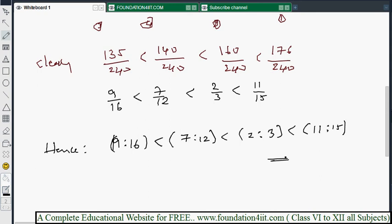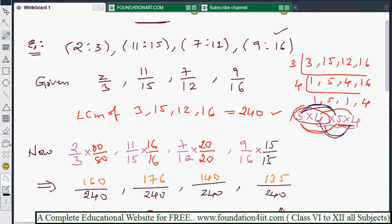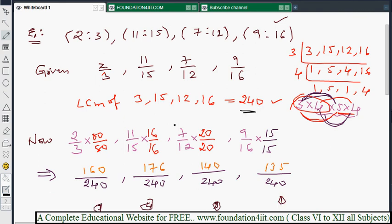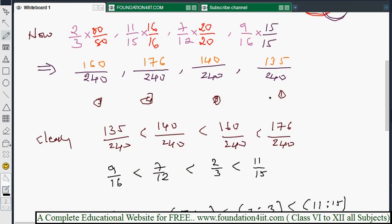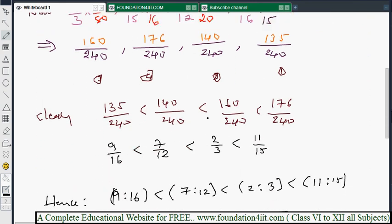This is the way we can write. Not only this, any number of ratios are given. After converting into fractions, find LCM. Then you should make the LCM value the same in denominators by verifying from LCM order. It is very easy. Then we can find out the given ratios whether it is small or big. Then we can make in ascending or descending order also. Descending means from reverse: 11 by 15 is greater than 2 by 3 is greater than 7 by 12 is greater than 9 by 16. Next, we will see how to divide some value in the given ratio.